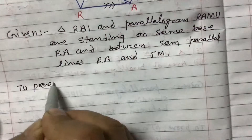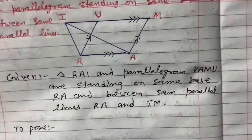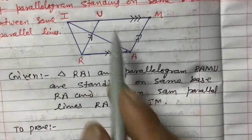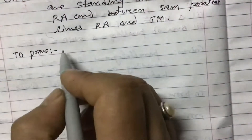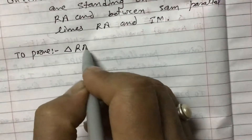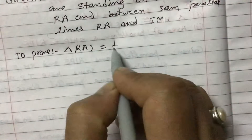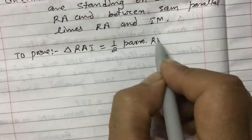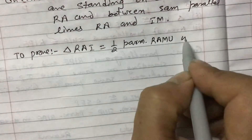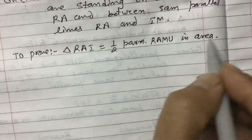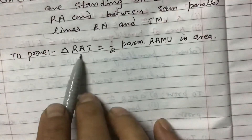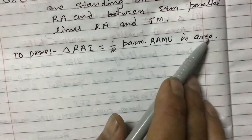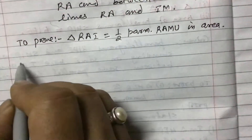To Prove: we need to prove that the area of triangle RAI is equal to half of the area of parallelogram RAMU. We write: area of triangle RAI = (1/2) × area of parallelogram RAMU. Now construction is needed.